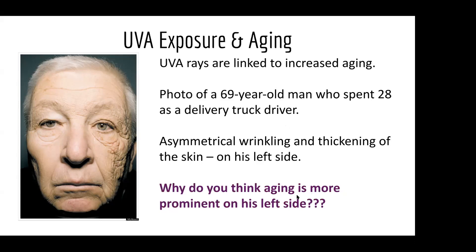Light came through the window of his delivery truck and affected the left side of his face more than the other side — exactly right. In the US they drive on the left side of the road, so his left face faces the window where sunlight comes in. After 28 years of that, probably without sunscreen, you get quicker aging on one side of the face than the other. It's a really easy way to see what the sun does to you without protection.